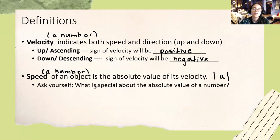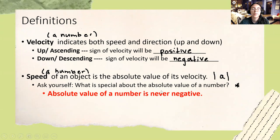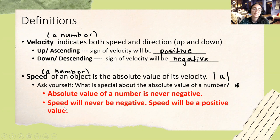I want you to ask yourself: what is special about the absolute value of a number? We discussed this in the last lecture. Well, we said that the absolute value of a number is never negative. So what does that mean for speed? If we're taking the absolute value of velocity to determine speed, and the absolute value of a number is never negative, it means that speed will never be negative — speed will always be a positive value. Whereas velocity can be positive or negative, speed is always going to be a positive number.